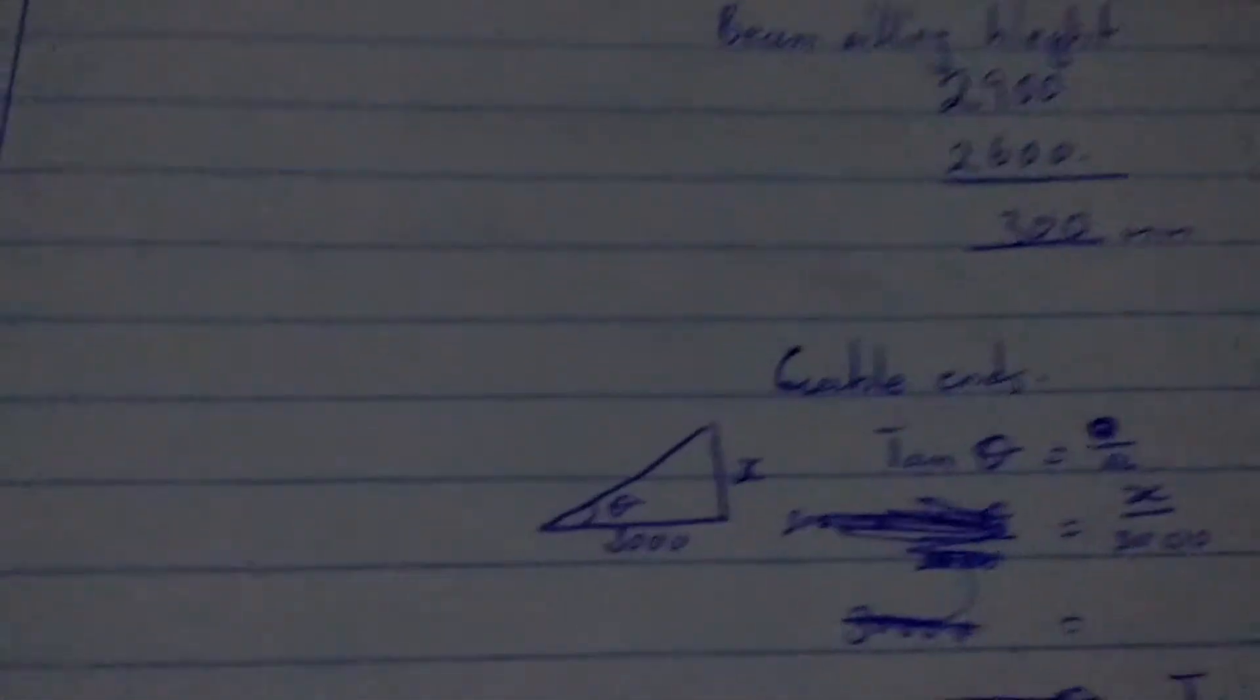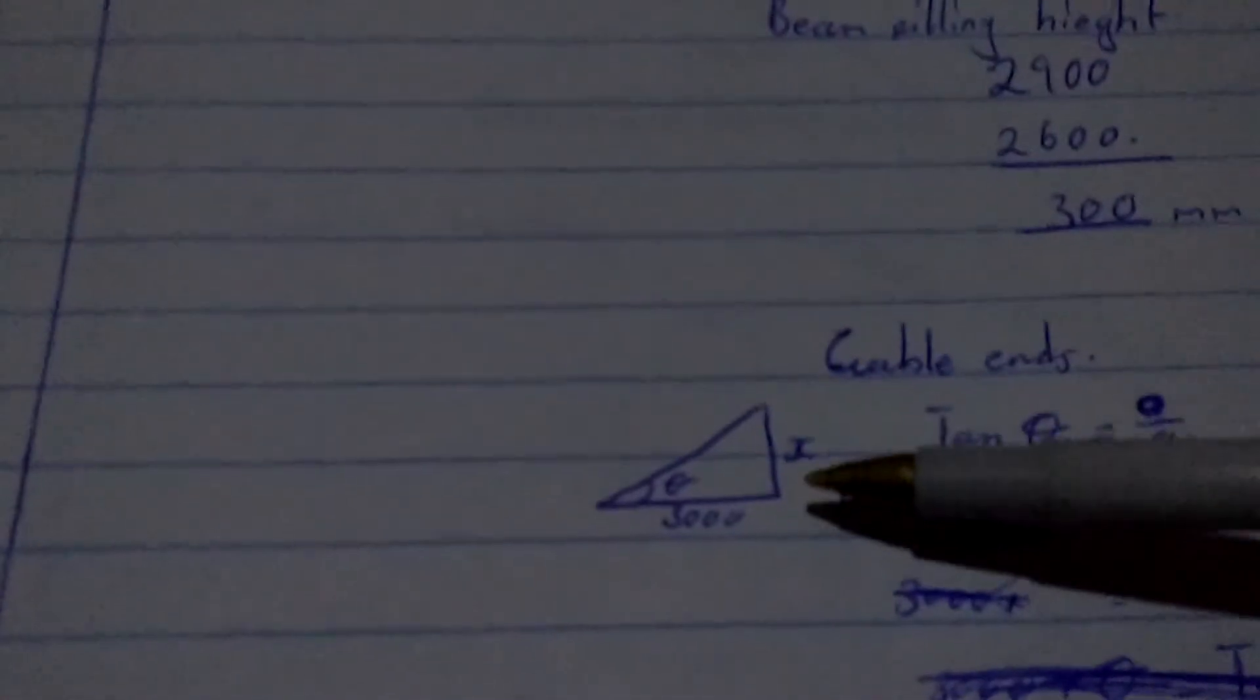And then for gable ends, so that sometimes you won't be given the two heights here for beam filling. So what do you have to do to calculate the height for beam filling here on gable ends?